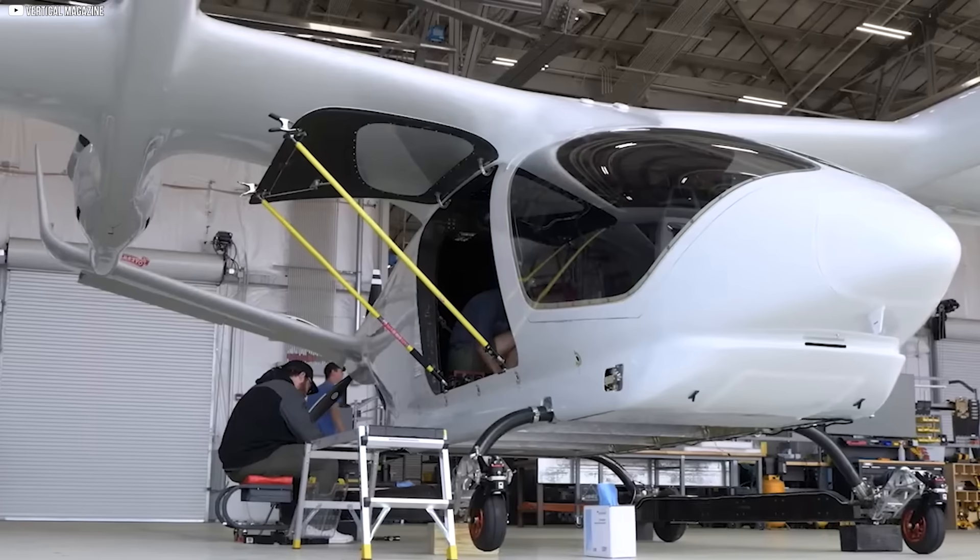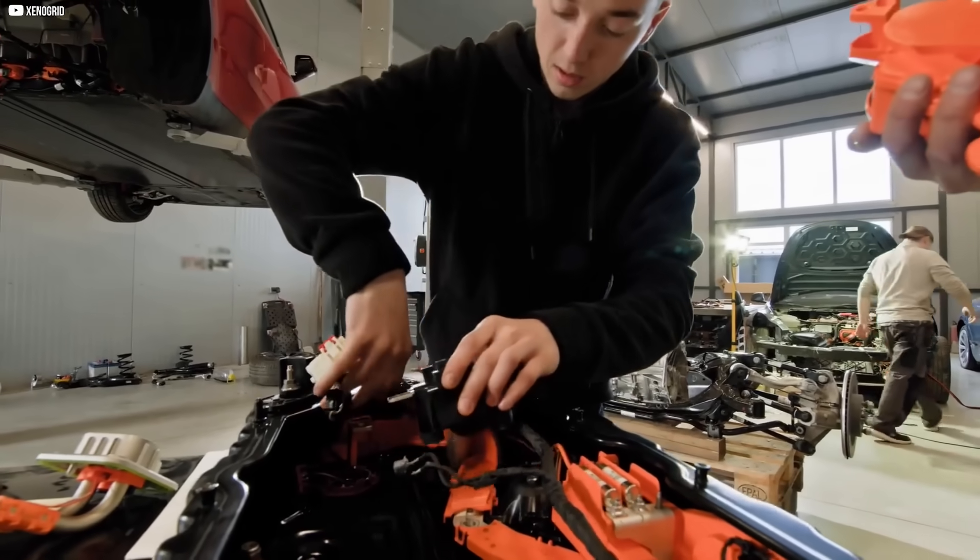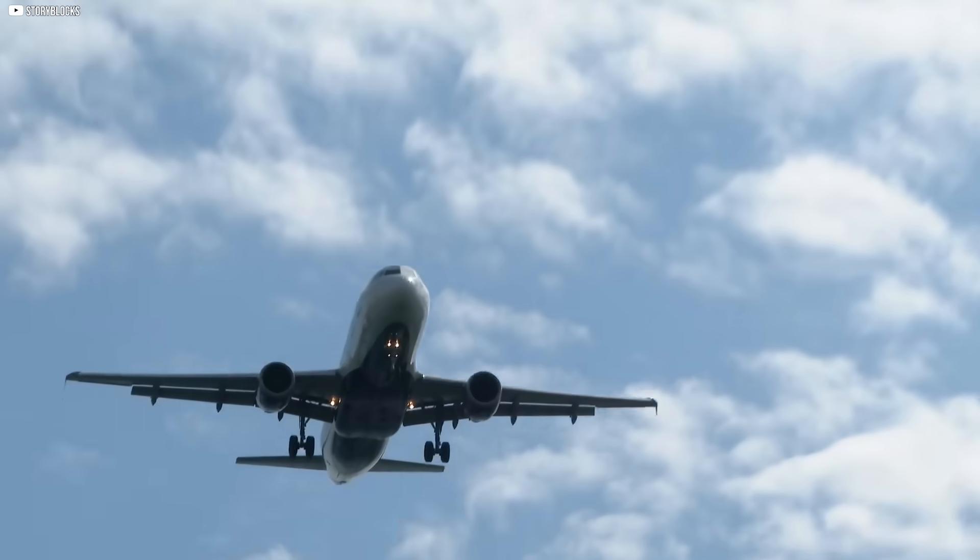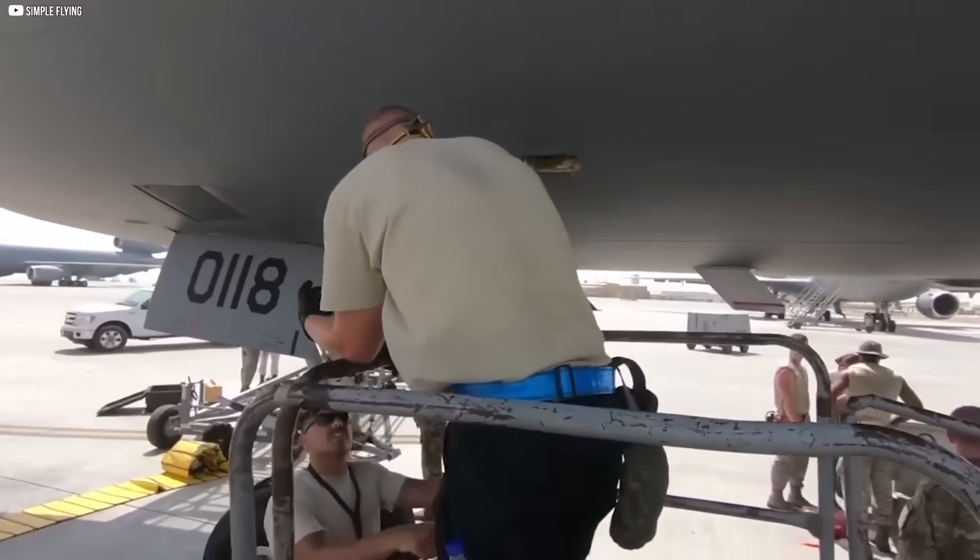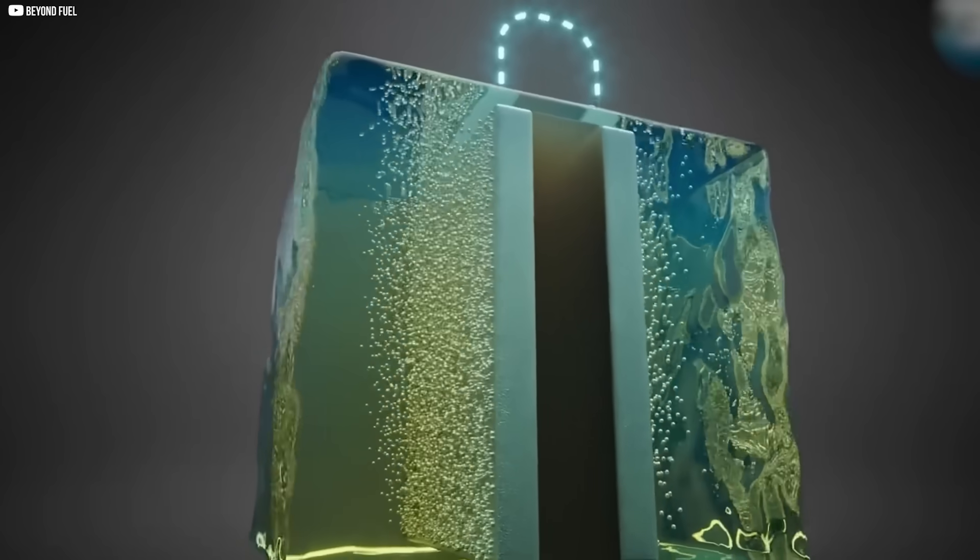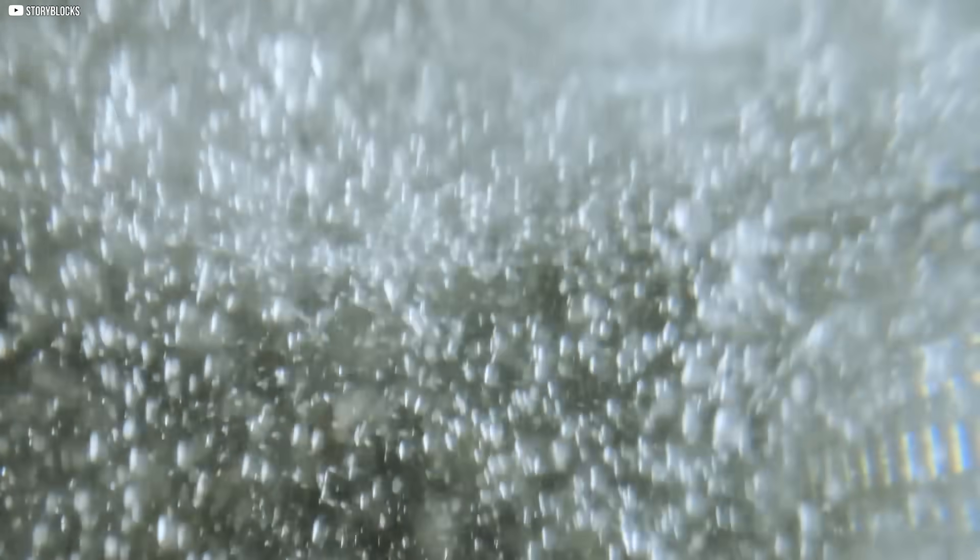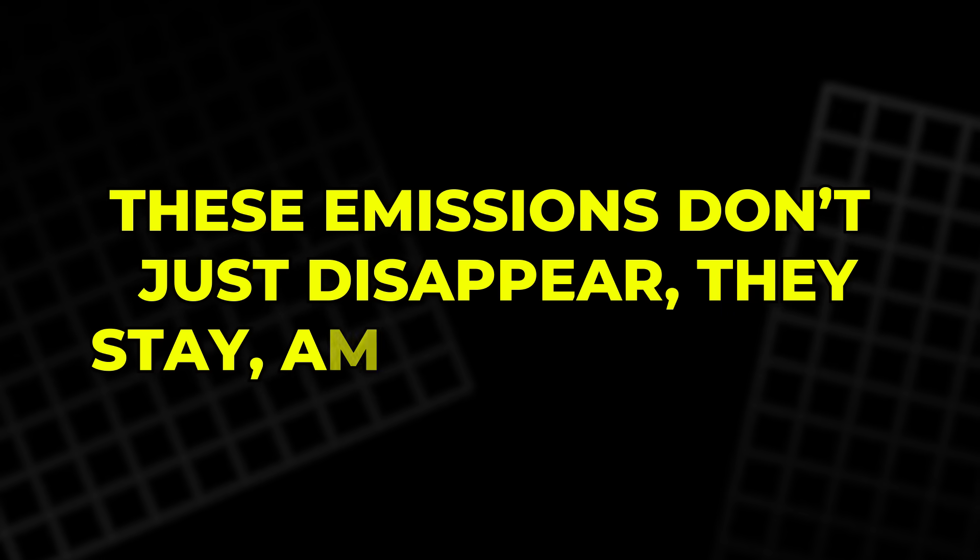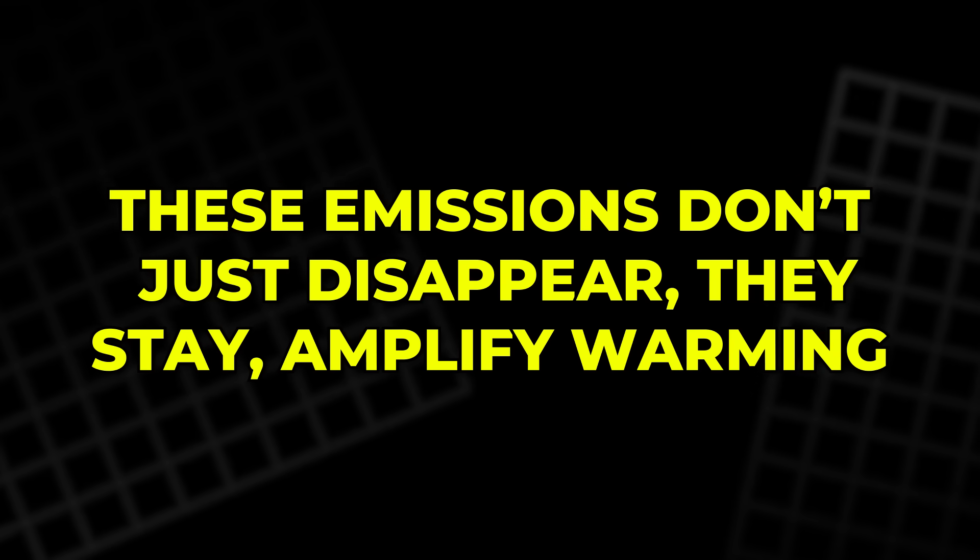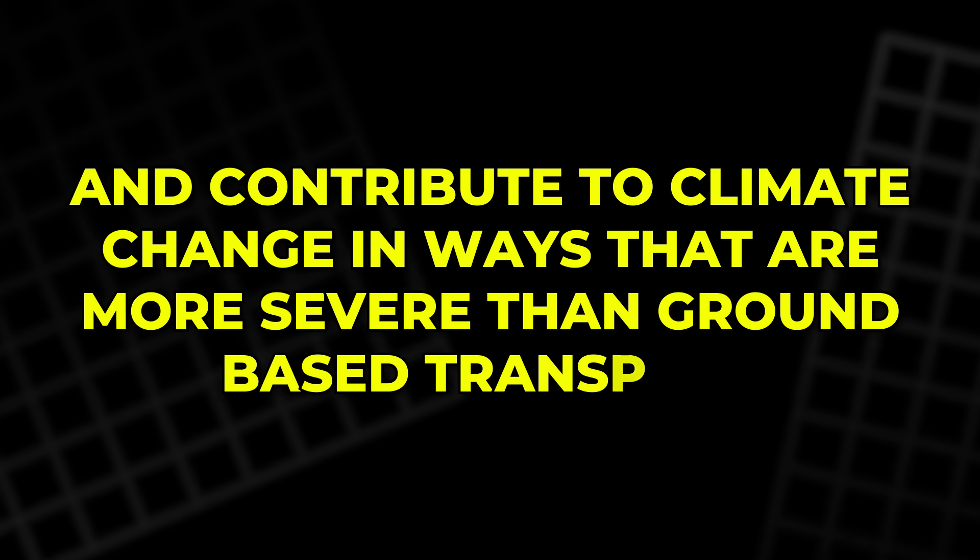Airplanes are engineering marvels, but they come with a hidden cost that hangs over us, quite literally. Every time a plane takes off, it burns through tons of kerosene-based jet fuel, releasing a cocktail of carbon dioxide, nitrogen oxides, and water vapor directly into the upper atmosphere. These emissions don't just disappear, they stay, amplify warming, and contribute to climate change in ways that are more severe than ground-based transport.